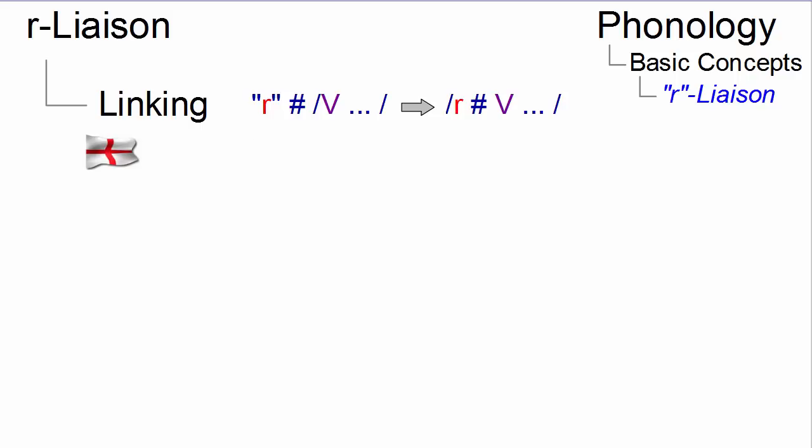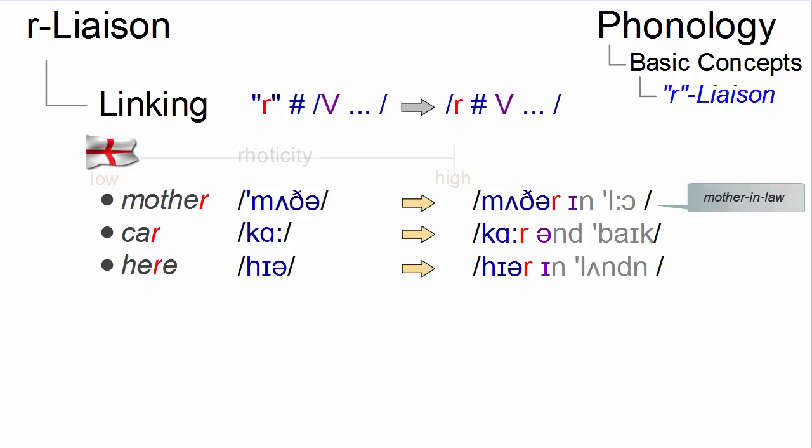So, in a variety such as received pronunciation, which is low on the roticity scale, words such as mother, car, or here are all pronounced without a final R. But if the next word starts with a vowel, we can get cases such as mother-in-law, car and bike, or here in London.